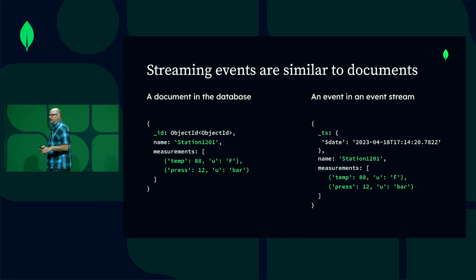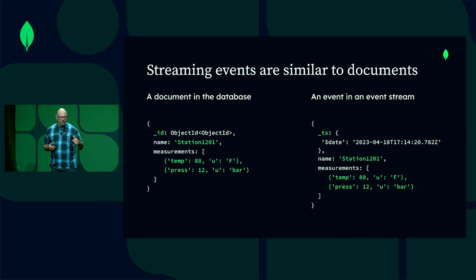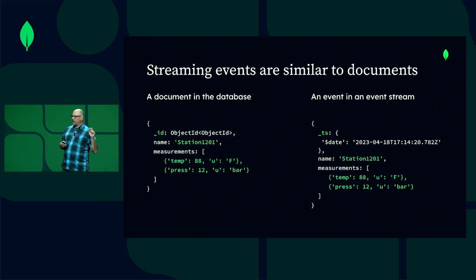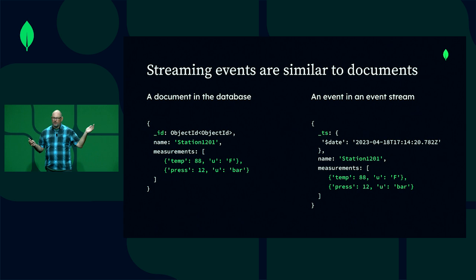When you think back about MongoDB, we all know documents — what a document looks like, how to manipulate it, what the underscore ID field means, how to index them. But at its very core, a document and an event in an event stream are very, very similar. On the left we've got an ID, a document in the database, and on the right we've got a timestamp. In one case we've got a mutable data store, and on the other side an immutable data stream — otherwise things look pretty much the same.